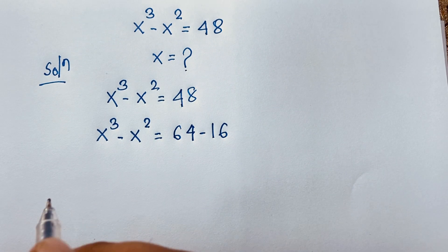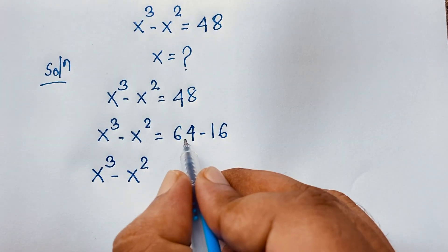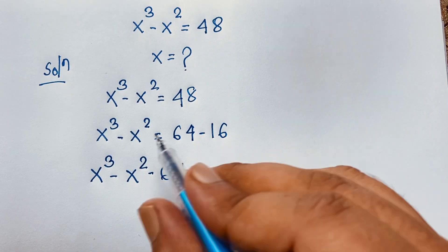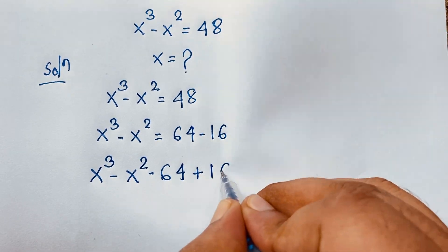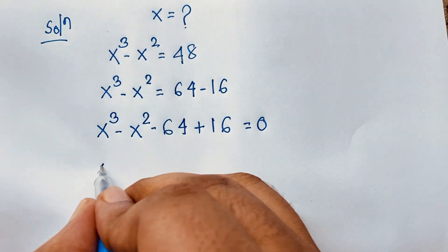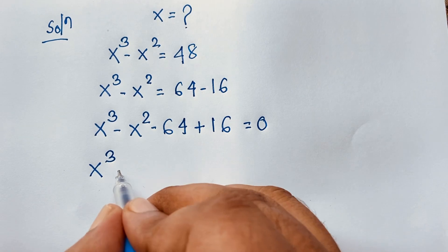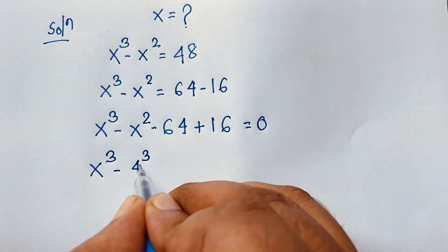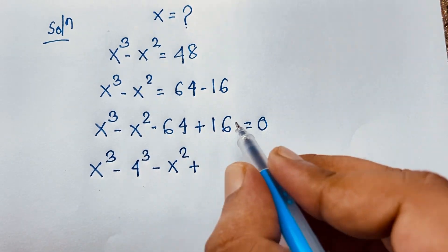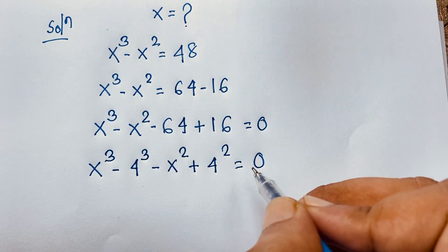Here x to the power 3, negative x squared. If I move 64 to this side it will be negative 64, and if I move negative 16 to this side it will be positive 16, equal to 0. Now here x cubed, and this is negative 4 to the power 3 — 4 to the power 3 equals 64. Here is negative x squared, then positive 16, which is 4 to the power 2, equal to 0.